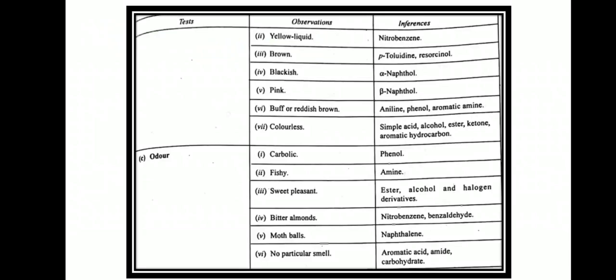After noting the nature and color, we will observe the odor of the compound. If the odor is carbolic, then phenol is present. If it is fishy, then amine is present. A sweet pleasant odor indicates ester, alcohol, or halogen derivatives. Bitter almond odor indicates nitrobenzene or benzaldehyde. Moth balls indicates naphthalene. If there is no particular smell, then aromatic acid, amide, or carbohydrate may be present.